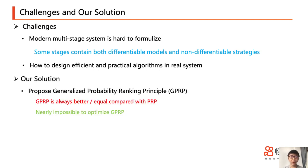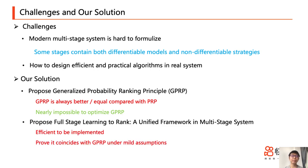In response, we introduce a Generalized Probability Ranking Principle, demonstrating its superior or equivalent performance compared to PRP. However, optimizing GPRP within contemporary multi-stage systems remains an unaddressed task due to the aforementioned challenges. To bridge this gap, we present First-Stage Learning to Rank, a unified framework adaptable across various stages of complex systems. Under certain verifiable assumptions within our system's context, we establish that our model aligns seamlessly with GPRP.